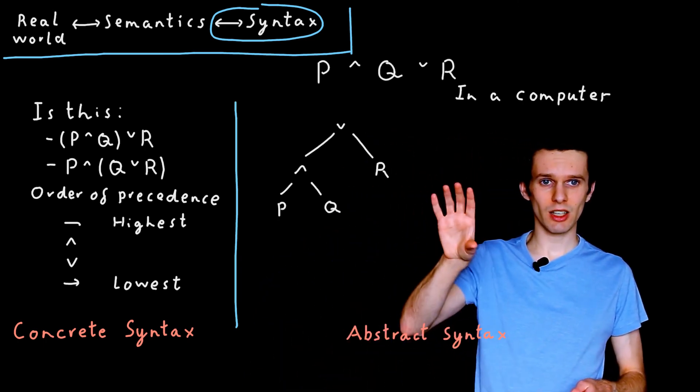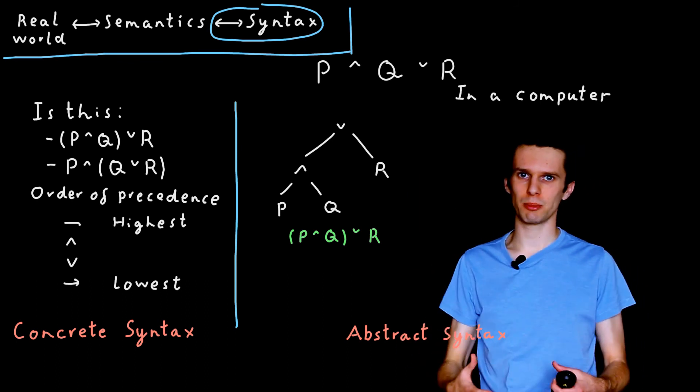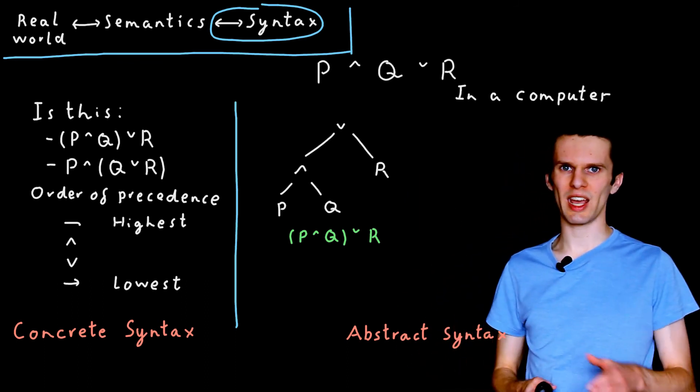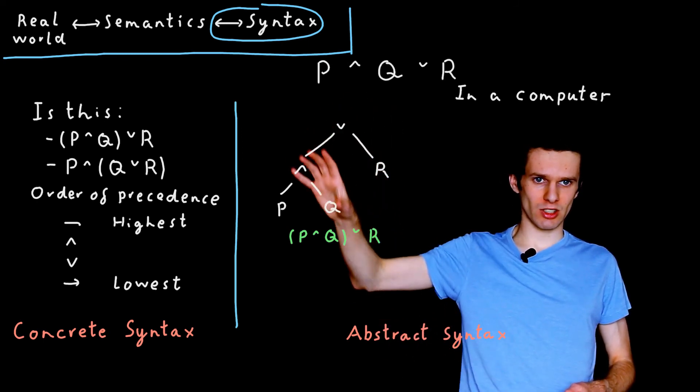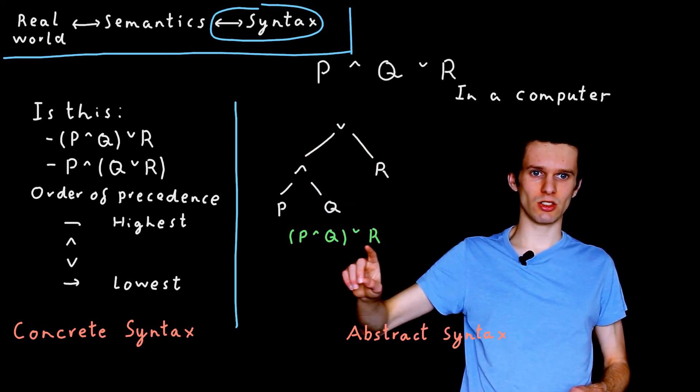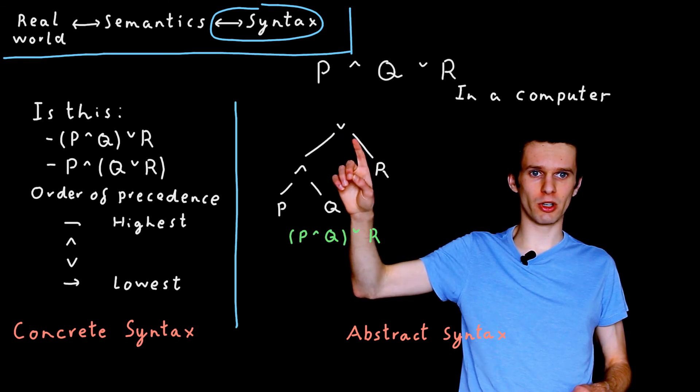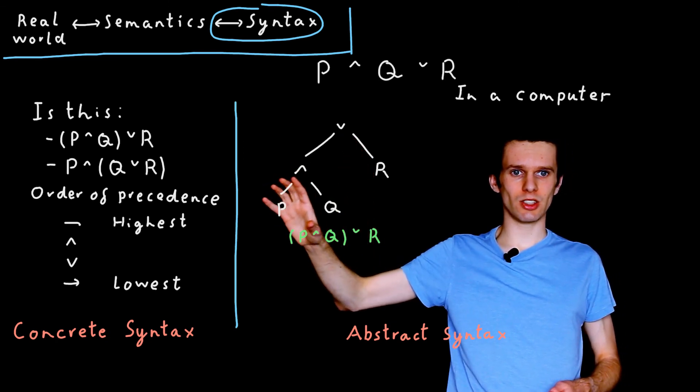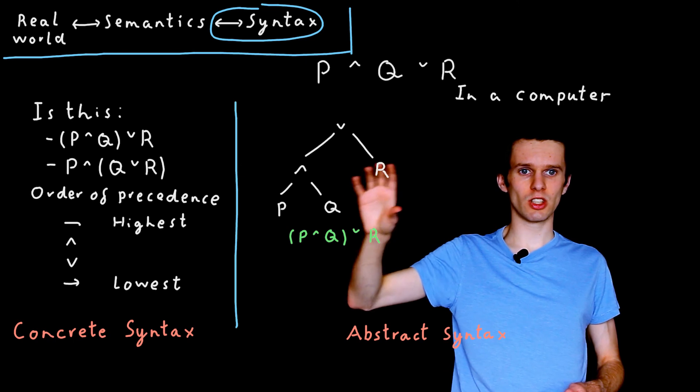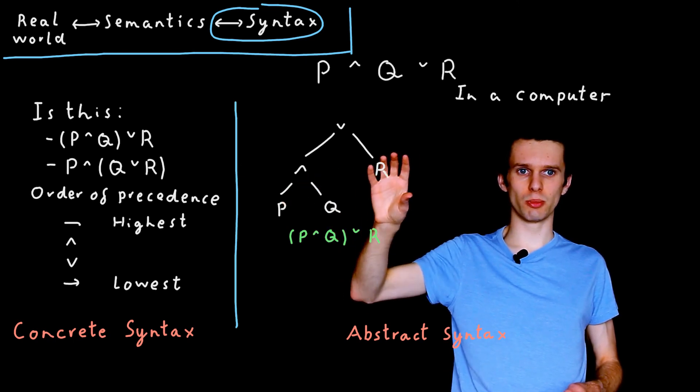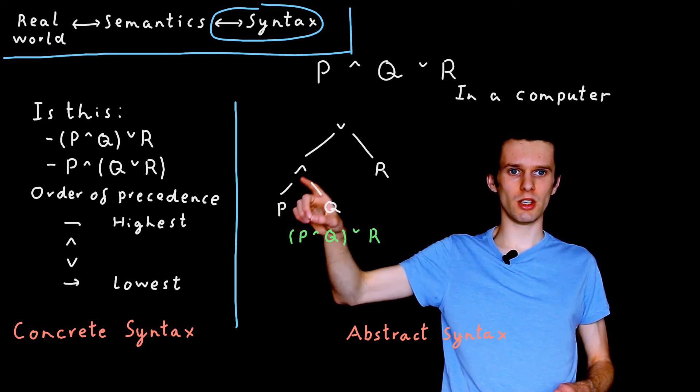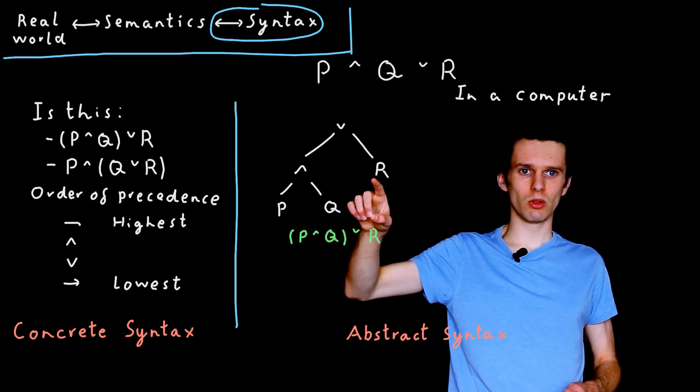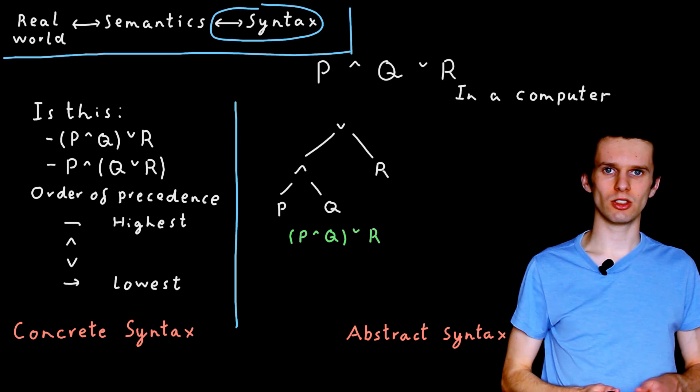So for instance, here, we see something we call an abstract syntax tree, or an AST for short. This abstract syntax tree represents this sentence. So the OR is the top level operator, and its two propositions are represented as sub-trees. So on the one hand, we have this proposition, P and Q, and R is its second proposition.